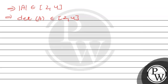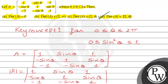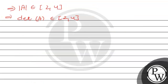This implies that determinant of A belongs to closed interval [2, 4]. Option D is correct. So the final answer is: determinant of A belongs to closed interval [2, 4]. I hope you understand it well. All the best, thank you.